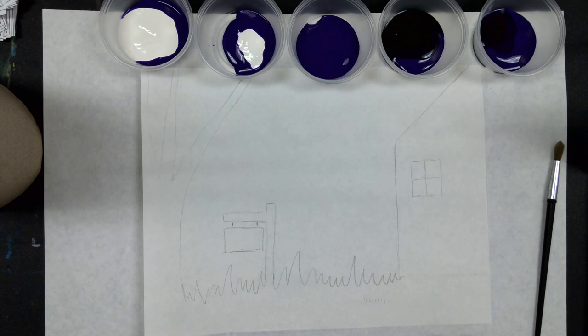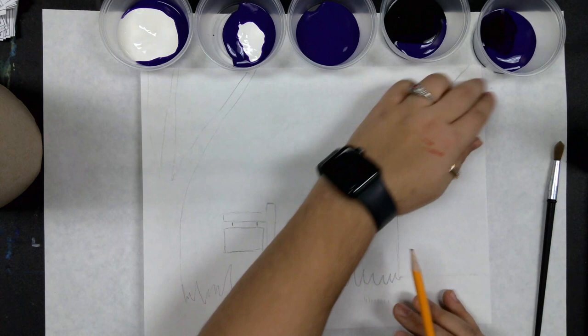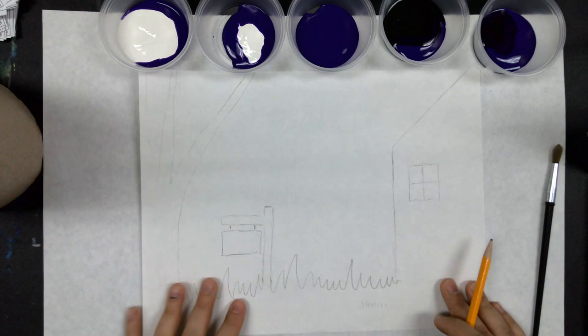The very first thing we're going to do is we're going to need our pencil before we start painting. What we need to do is divide our paper up into five sections, only where there's the background.